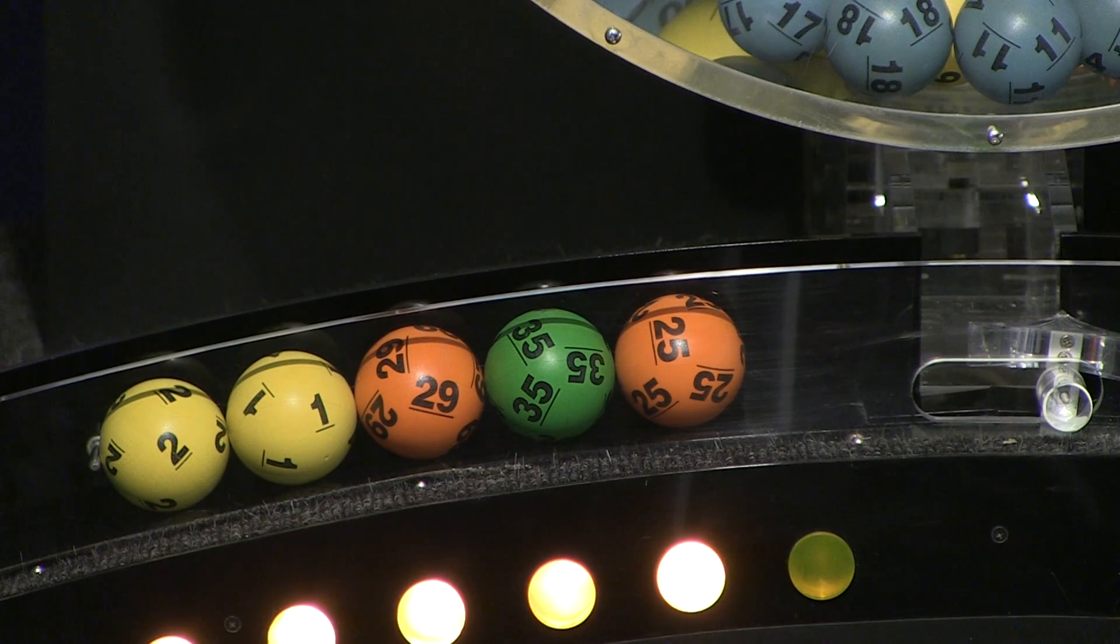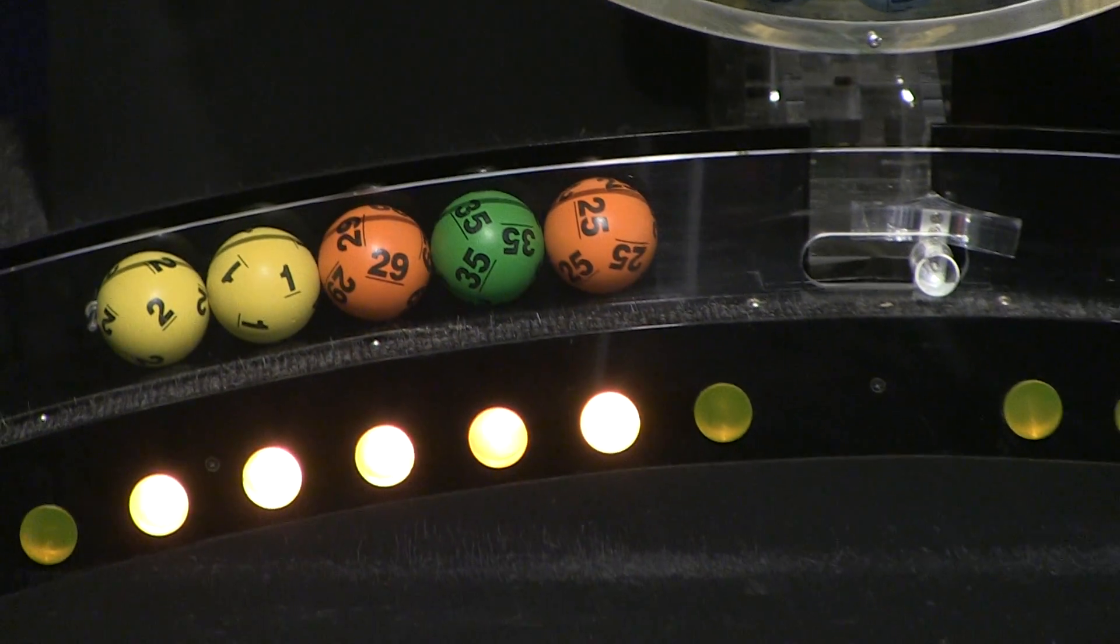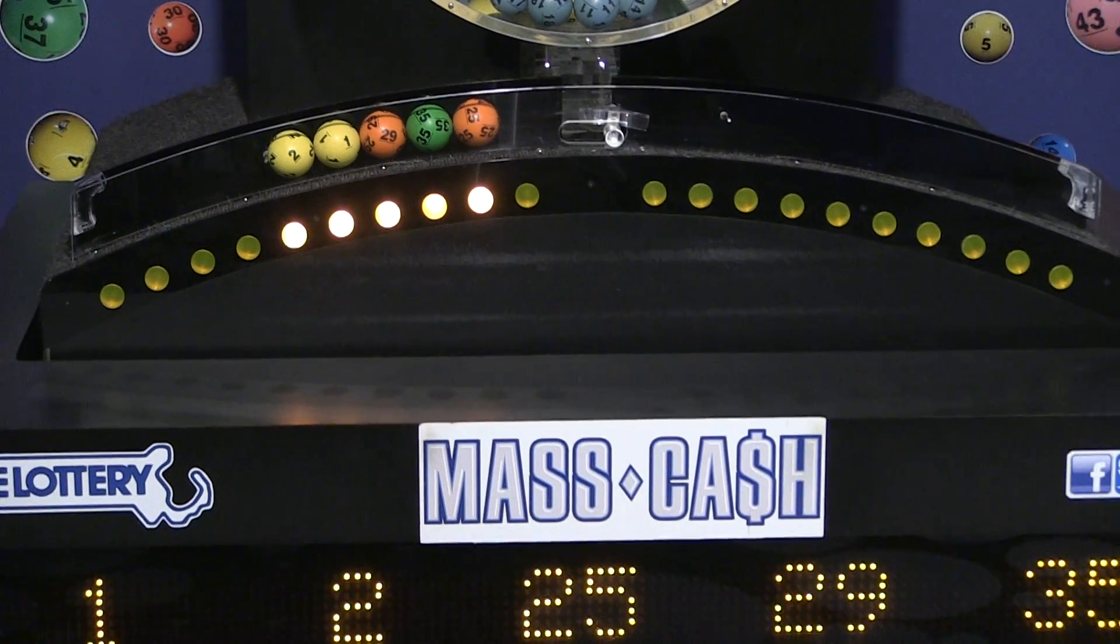Once again, the winning Mass Cash numbers for Tuesday, March 5th are 1, 2, 25, 29, and 35.